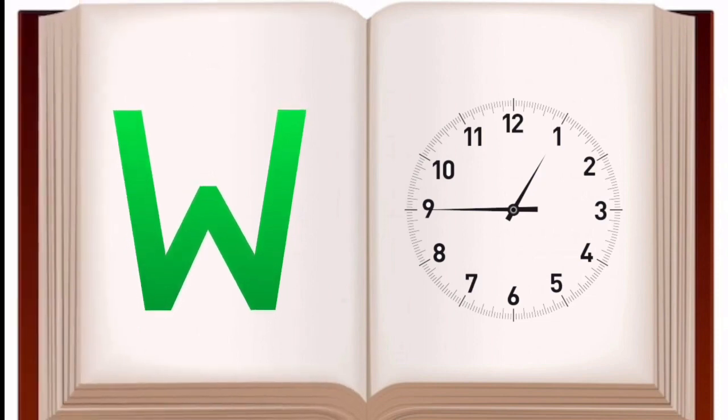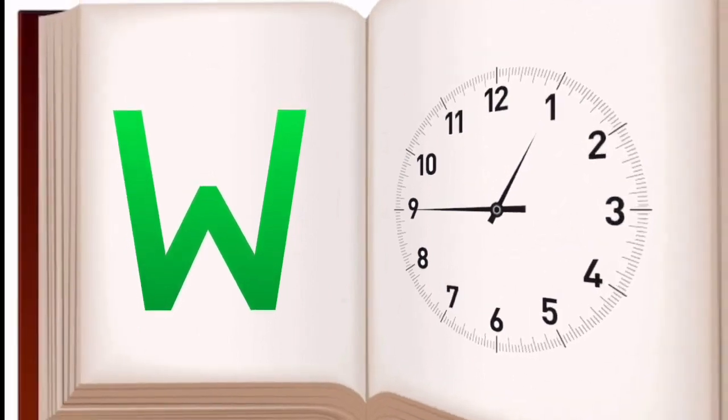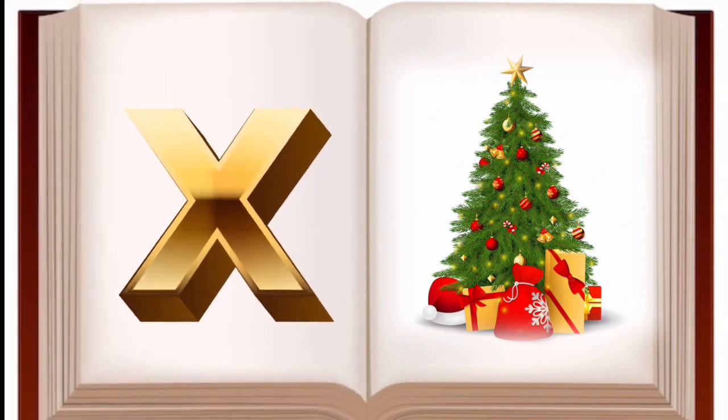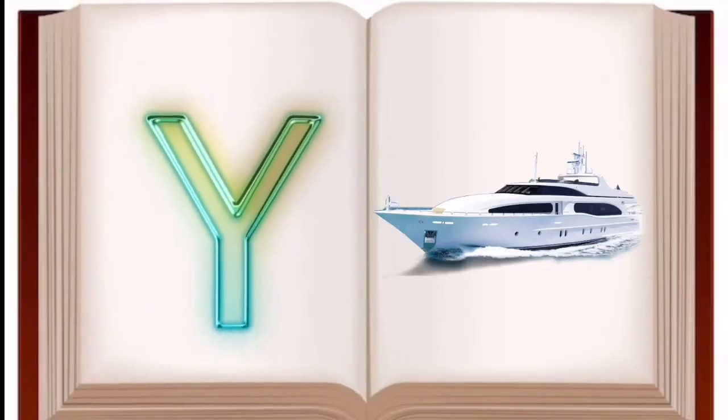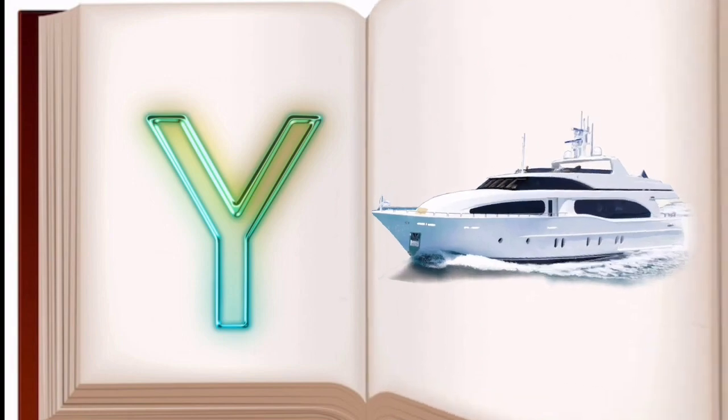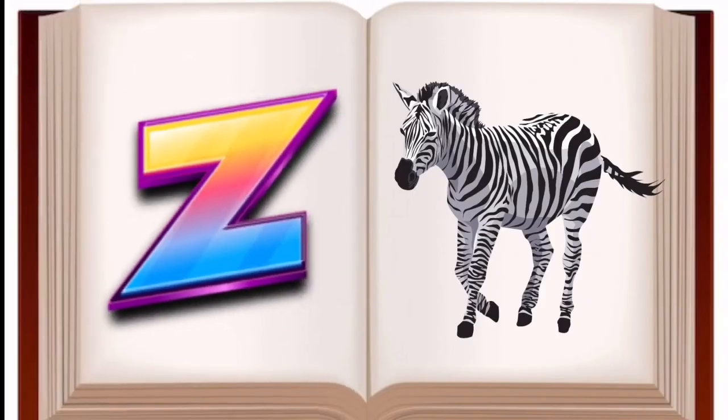W for watch, watch means gadi. X for Xmas tree, Xmas tree mane sajouti pair. Y for yacht, yacht means nau.